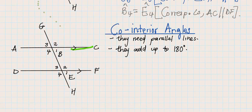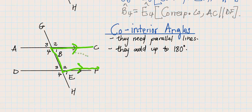Our first pair of co-interior angles — we can see a C-shape here. In this C-shape I have parallel lines, so I know that angle B1, if I add B1 with angle E2, I must get 180 degrees.